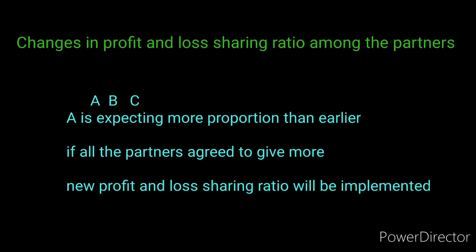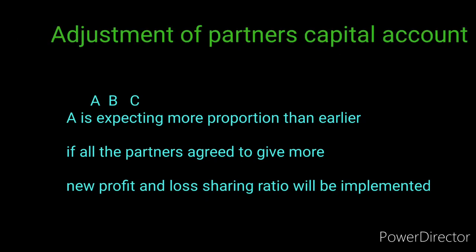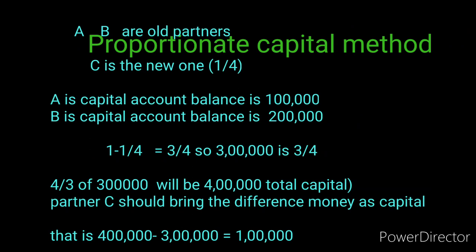Changes in profit and loss sharing ratios among partners: if an active managing partner (A) is unhappy with the existing ratios because he does all the work, and the other partners agree to change the ratios in his favor — here no admission, retirement, or death occurred, but the profit and loss sharing ratios are altered. The deed will be altered based on the new profit and loss sharing ratio, making it a reconstruction. This is the proportionate capital method, and one 6-mark question will definitely be asked based on this.